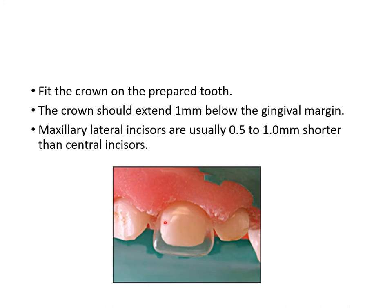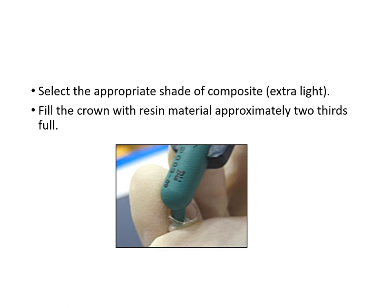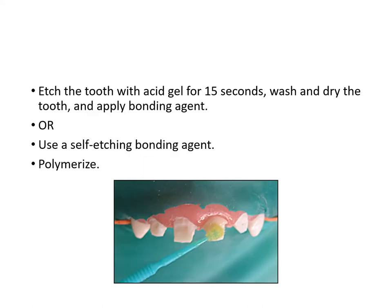Fit the crown over the prepared tooth — you should see a uniform space all around, which will be occupied by composite resin. Ensure crown margins are approximately 1 millimeter sub-gingival so the transition between composite and tooth is not visible. Select the appropriate shade — extra light is recommended. Fill the crown with composite resin approximately two-thirds full to avoid air bubbles. Then etch the entire tooth surface and apply bond, and polymerize the prepared tooth ready to receive the crown.